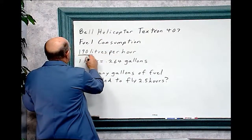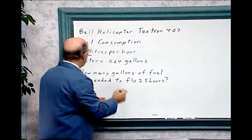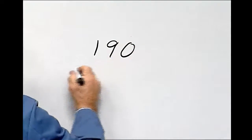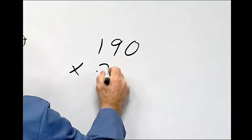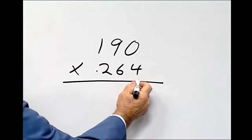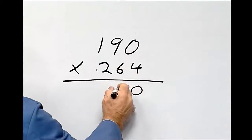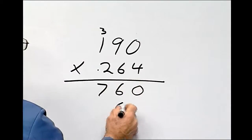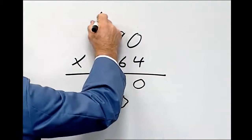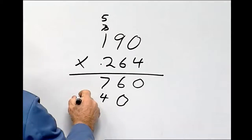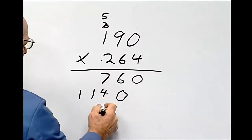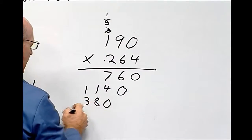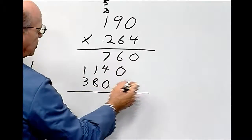So the fuel consumption is 190 liters. Now, we want to find gallons. One liter equals .264 gallons, so we've got to take 190 times .264. So four times zero is zero. Four times nine is 36. Carry three. Four times one is four plus three is seven. Six times zero is zero. Six times nine is 54. Six times one is six plus five is 11. And two times zero is zero. Two times nine is 18. Two times one is two plus one is three. Let's add up these three rows.